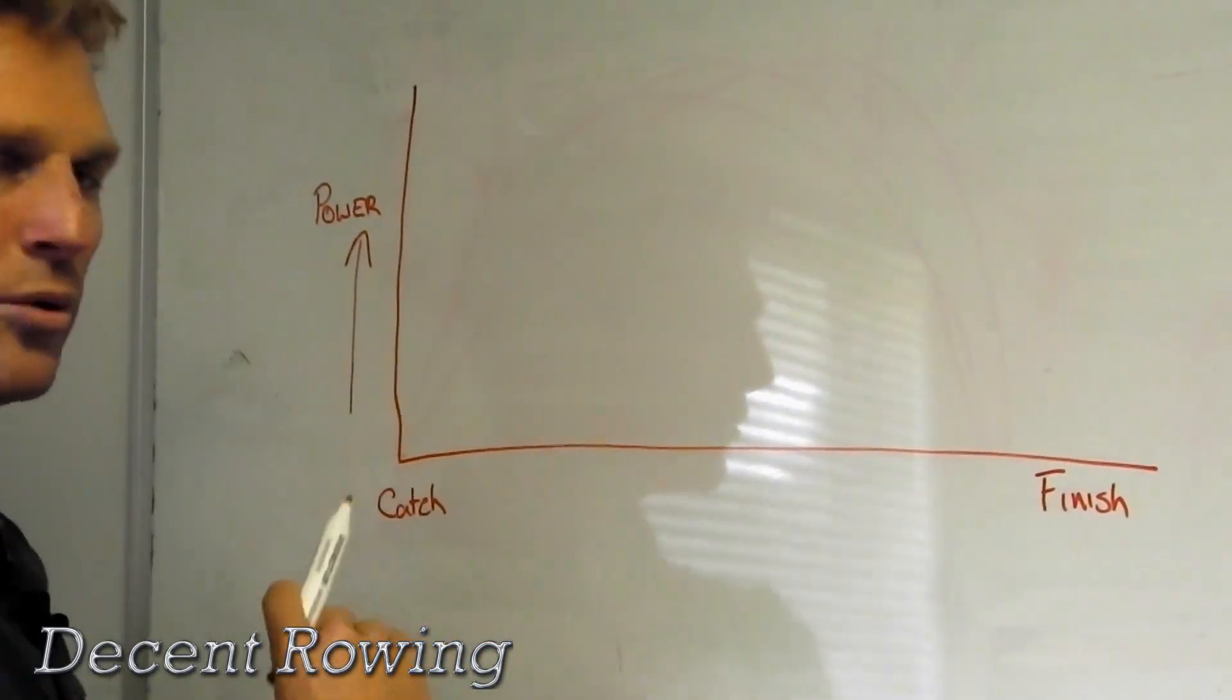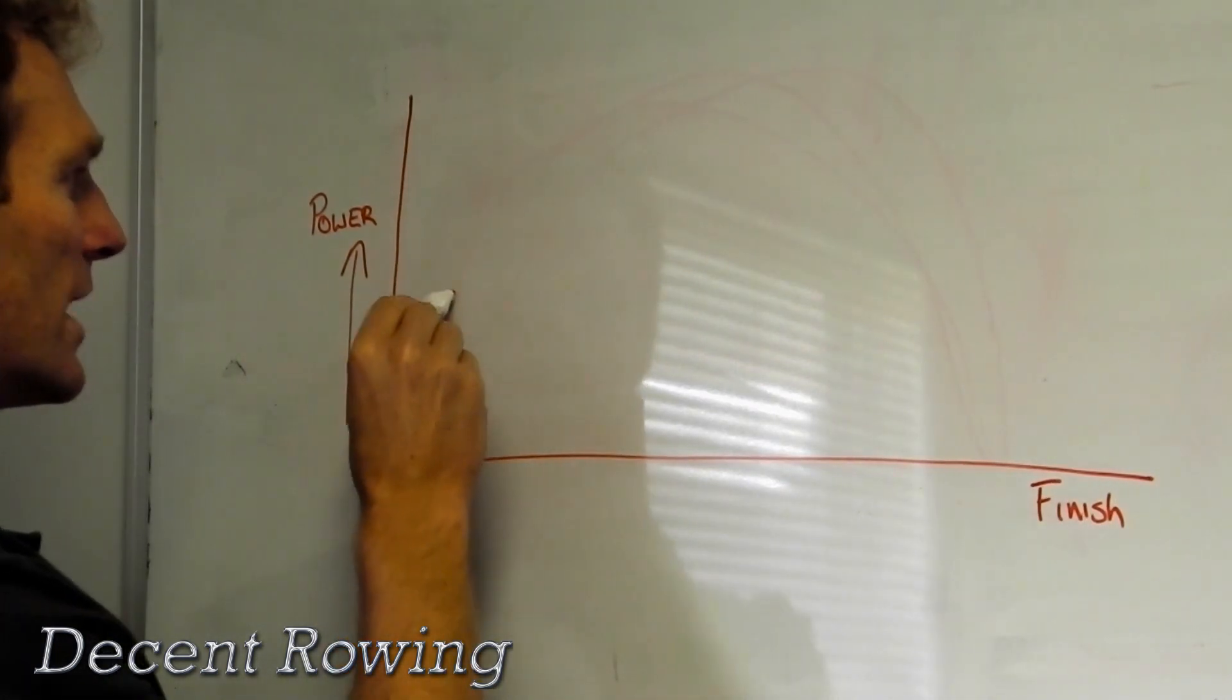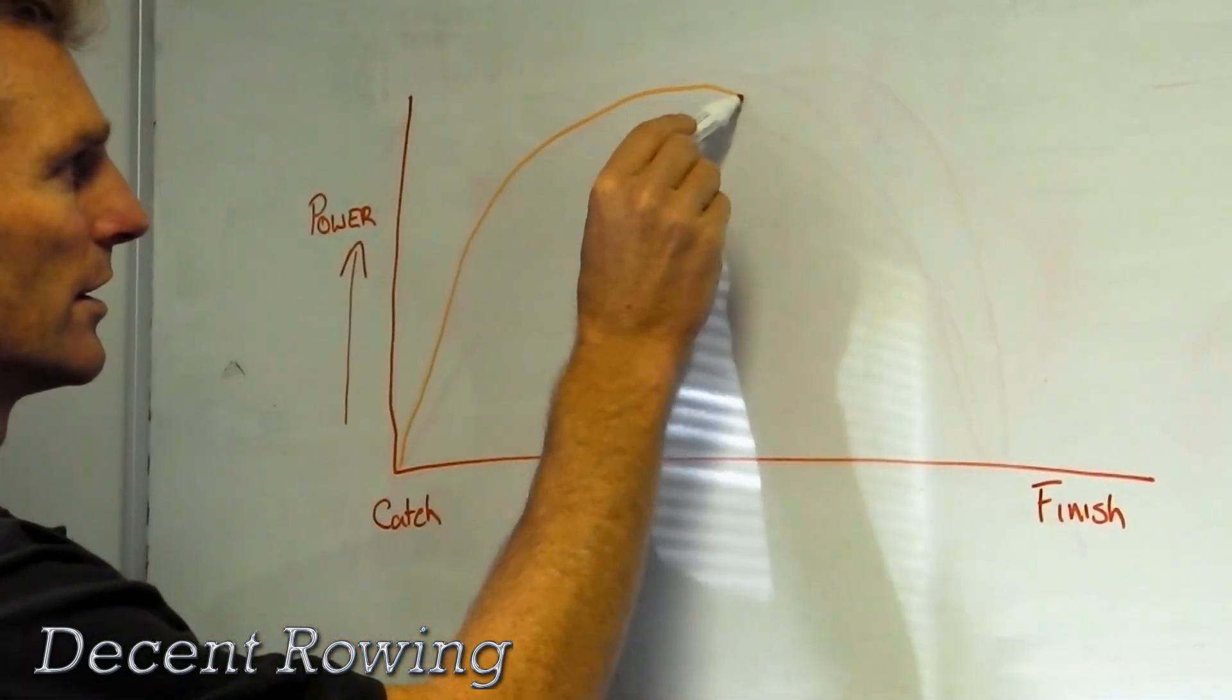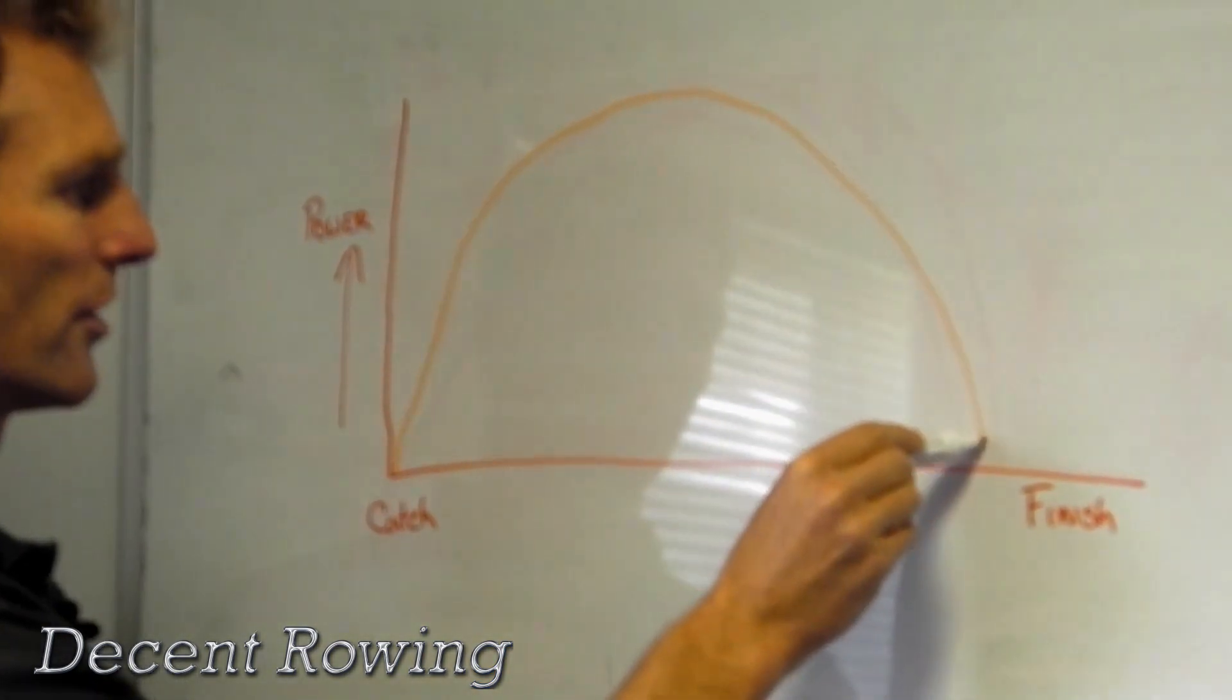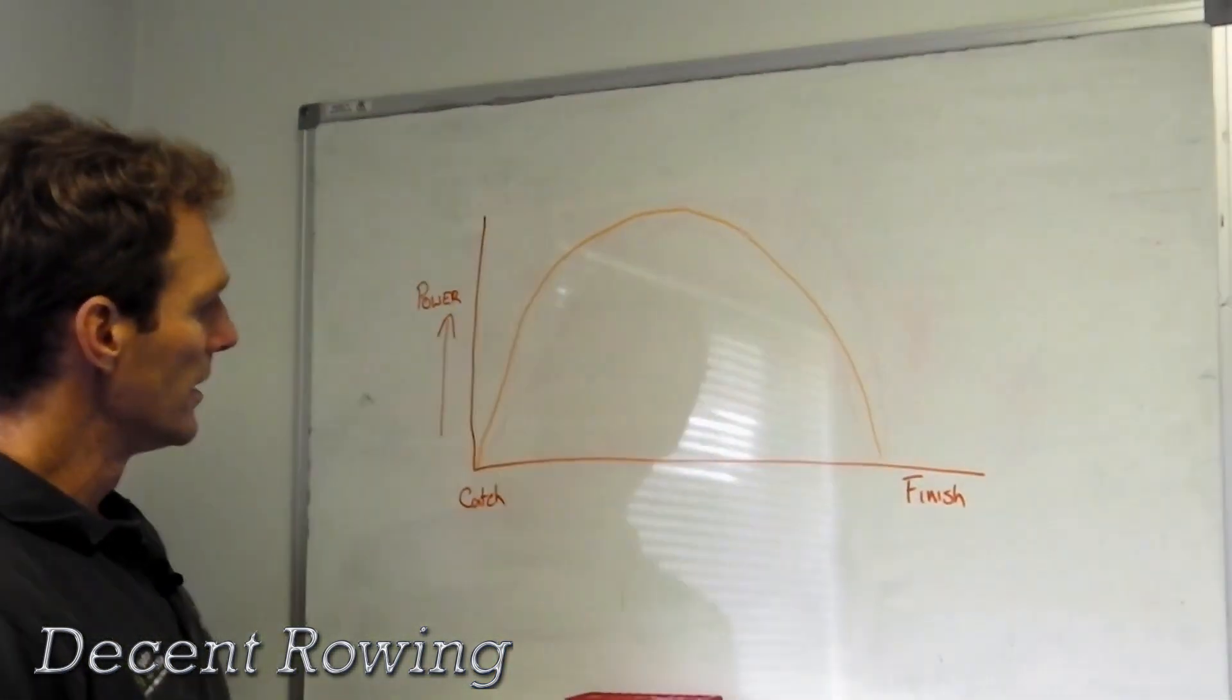They would have quite a quick force curve, so the catch would be quite sharp and build, and then they would try and hold out the second half of the stroke. That would be the stroke man.